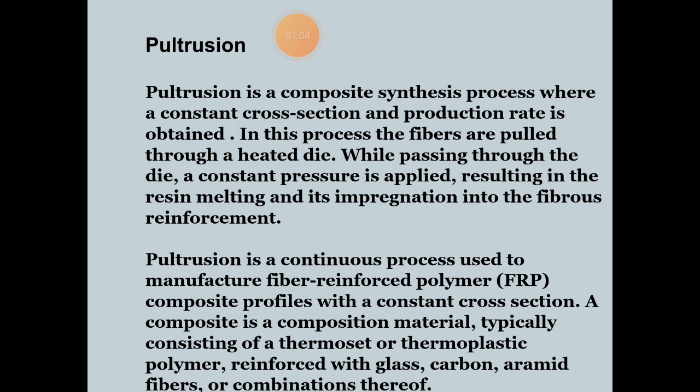Pultrusion is a composite manufacturing process where a constant cross-section and production rate is obtained. In this process, the fibers are pulled through a heated die. While passing through the die, a constant pressure is applied, resulting in the resin melting and its impregnation into a fibrous reinforcement. It is a continuous process used to manufacture fiber reinforced polymers, meaning FRP.